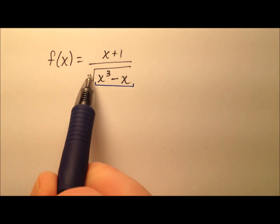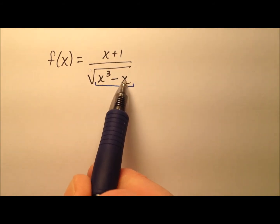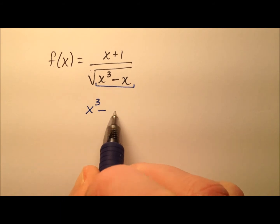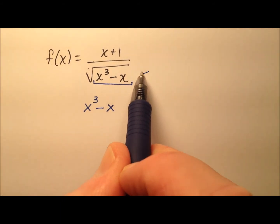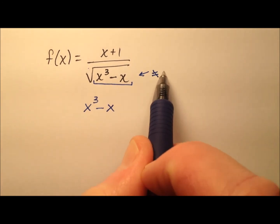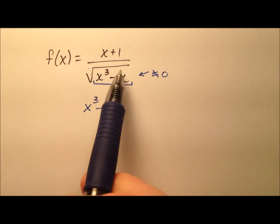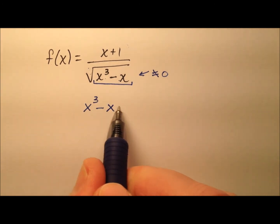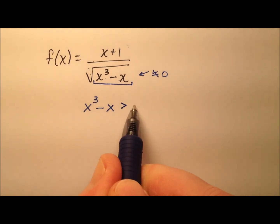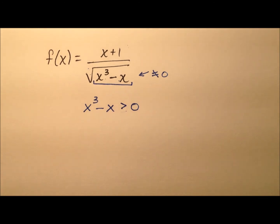First, it's a square root with an even index, so we can't have this radicand, the x cubed minus x expression, be negative. It has to be non-negative. But since it's in the denominator, it also cannot be zero, because if it is zero, the square root of zero is zero, and then we have division by zero. So instead of x cubed minus x being greater than or equal to zero, it's just going to be greater than zero. We cannot have it equal to zero as well.